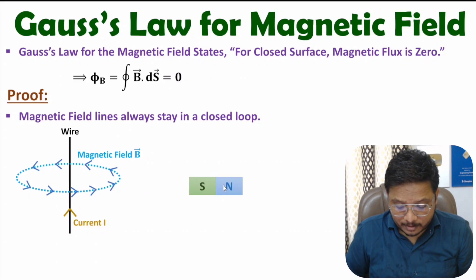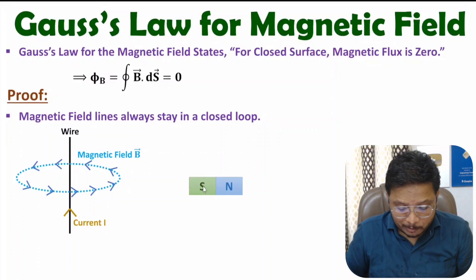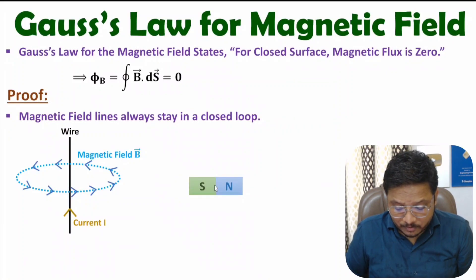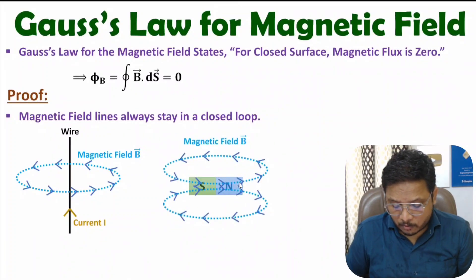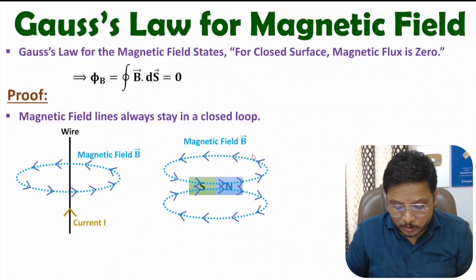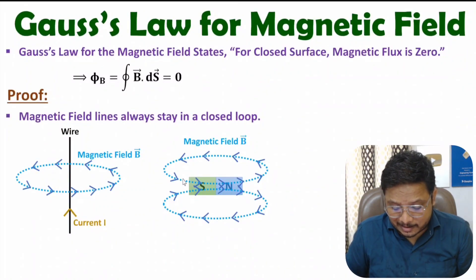Let me give you one more example. Here we have a magnet — the north pole of the magnet is here and the south pole is here. Magnetic field lines emerge from the north pole and get enclosed at the south pole. So you can observe that magnetic field lines emerge from the north pole and close at the south pole — they stay in a closed loop.